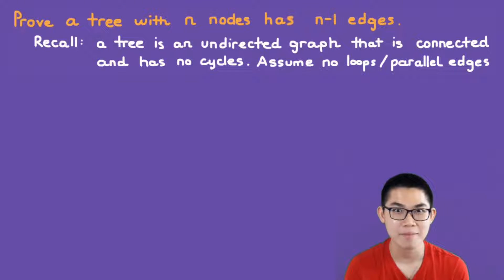If you need a quick recap on what trees are, a tree is an undirected graph that has to be connected and does not have any cycles. So that also means it does not have any loops or parallel edges.